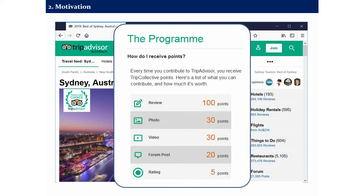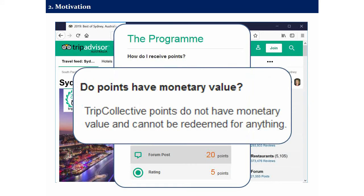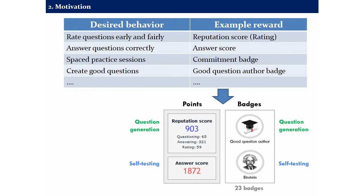A lot of designers look to the game world to understand: can we use elements from games to get some type of increased engagement from our own users? TripAdvisor is a great example — you can earn points for writing reviews or uploading photos. But if you ask what you get for these points, TripAdvisor literally tells you right there on the website that these points have no monetary value and cannot be redeemed for anything. And yet they're there because they work — they do drive engagement for some users. PeerWise incorporates a range of game elements: a point system, a badge system.